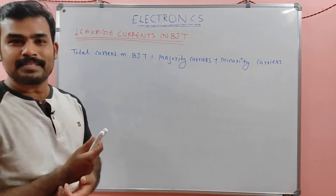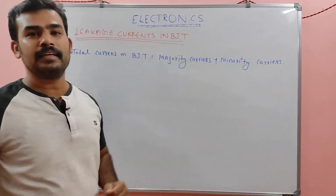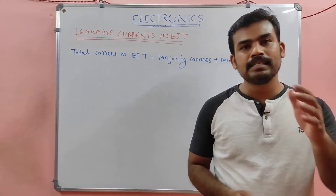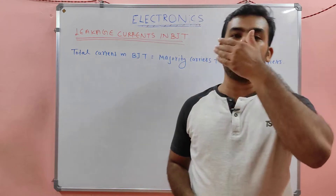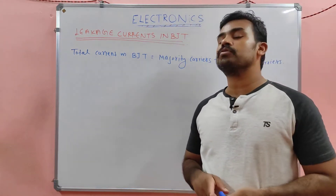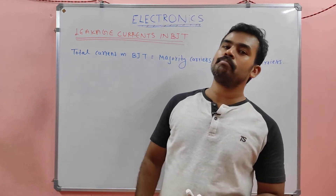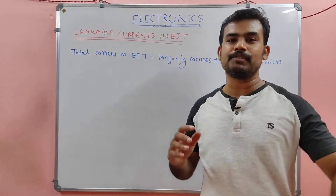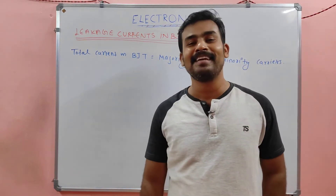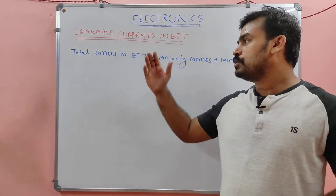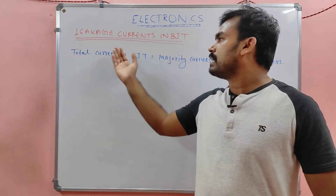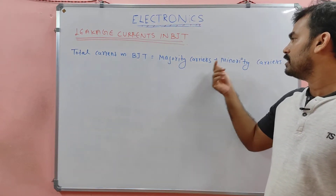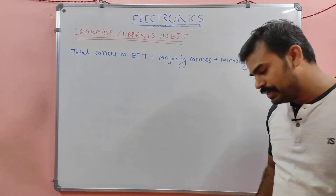Let's discuss the leakage current in a BJT. BJT stands for bipolar junction transistor. As the name indicates, conduction is due to both majority as well as minority carriers — that is why the name bipolar. Both electrons and holes are responsible for conduction in a BJT. So the total current in a BJT equals the current due to majority carriers plus the current due to minority carriers.